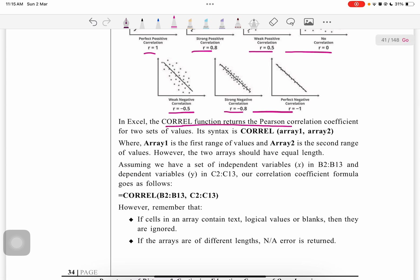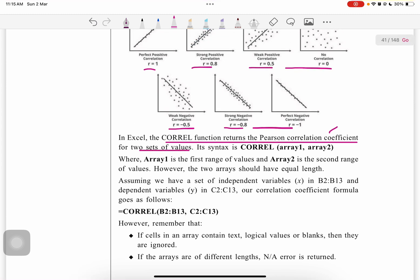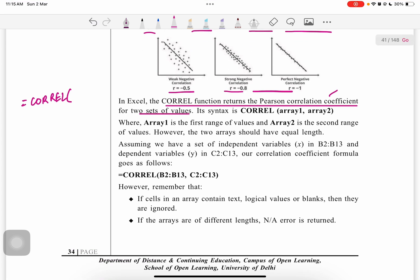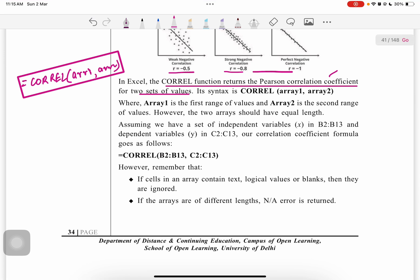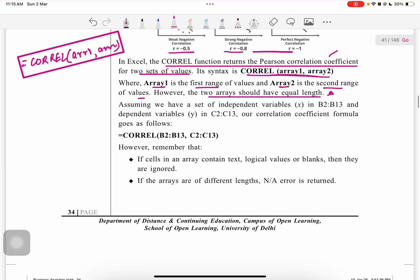In Excel, the CORREL function returns the Pearson correlation coefficient for two data sets. Pearson's correlation coefficient calculation is done by the CORREL function. The syntax is CORREL with array one and array two. Array one is the first range of values, and array two is the second range of values. The two arrays should have equal length. Assuming we have a set of independent variables B to B16 and dependent variable C to C16, our correlation coefficient formula would be like this.